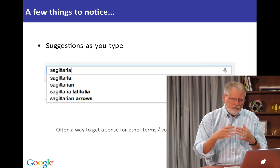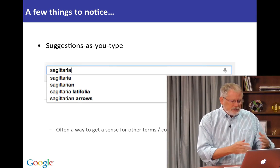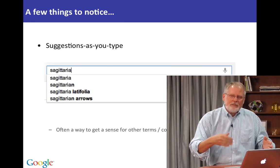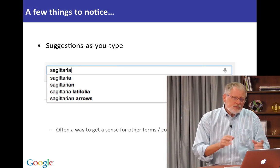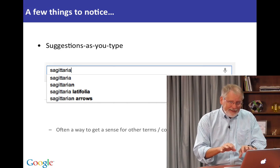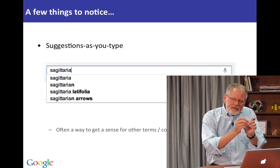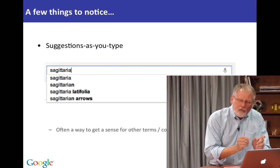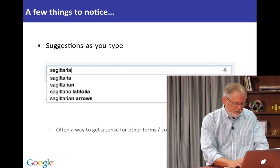So for example here, I've started to type Sagittaria, but below the search box there are a few other options: Sagittaria Latifolia — the full Latin name — and Sagittarian arrows. So you see those are the completions, that is the other ways that people might have completed what it is you're typing. This is really handy because it not only allows you to type more quickly, but also gives you a sense for what other concepts this prefix — these letters you've typed so far — could be expanded into.